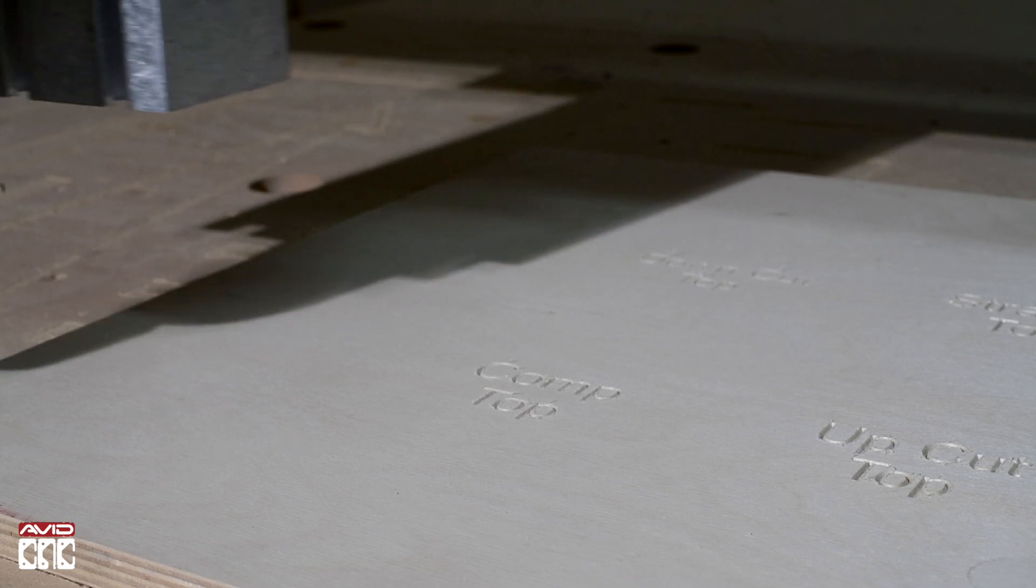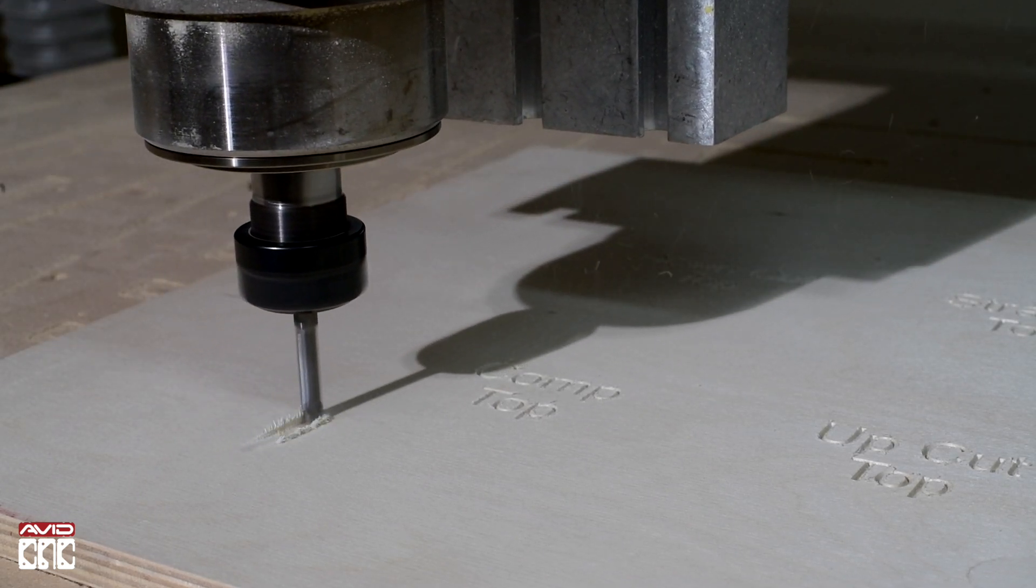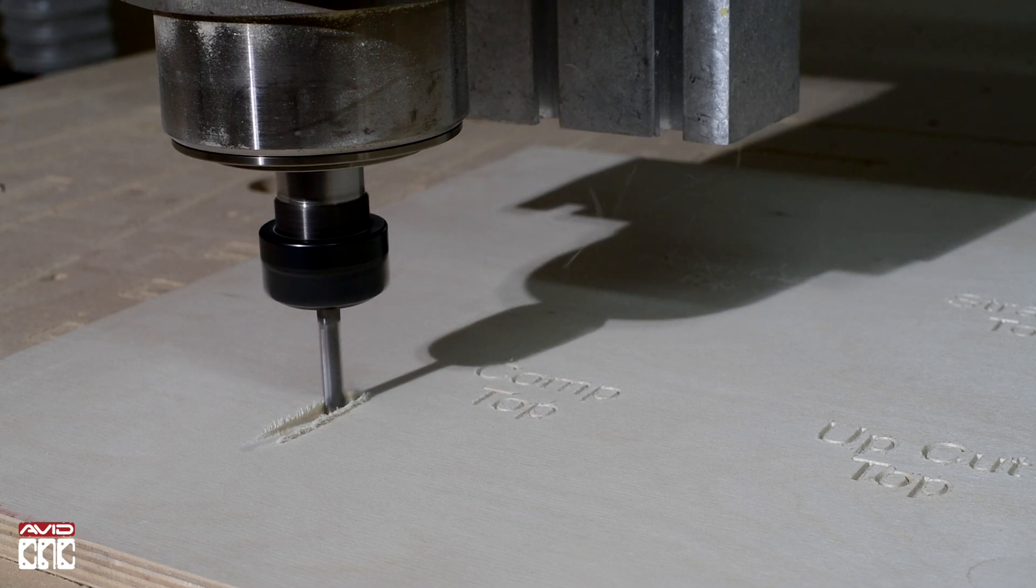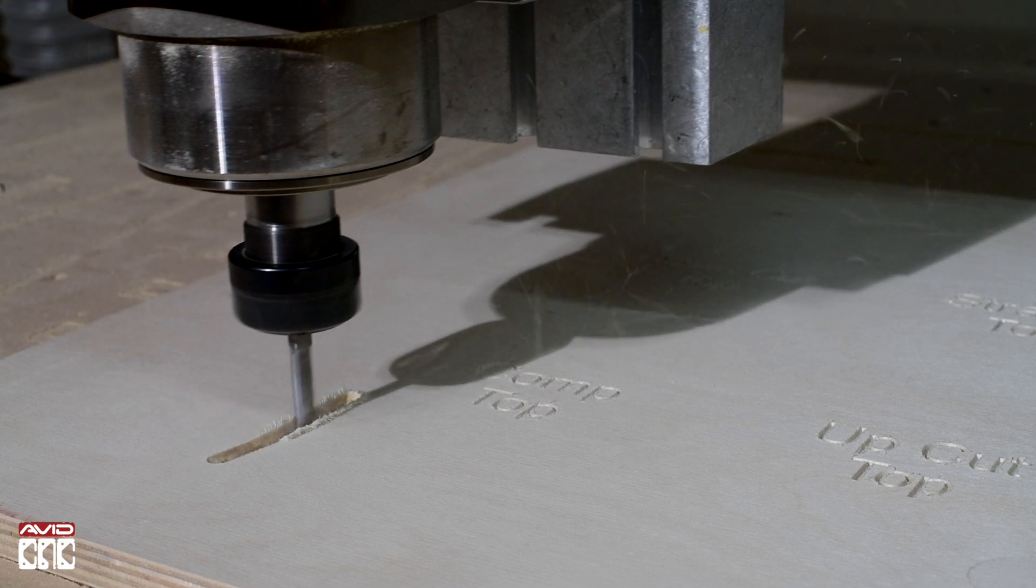Let's test out these theories and cut out a few samples. First up, compression bit. You can see we've programmed a ramp and a lead-in to minimize the amount of contact the up spiral portion of the bit contacts the perimeter of the part.